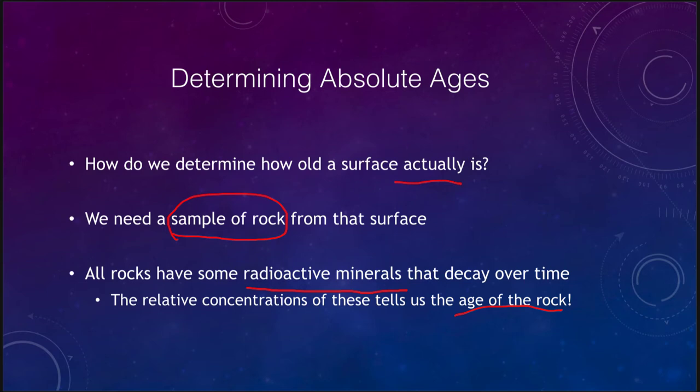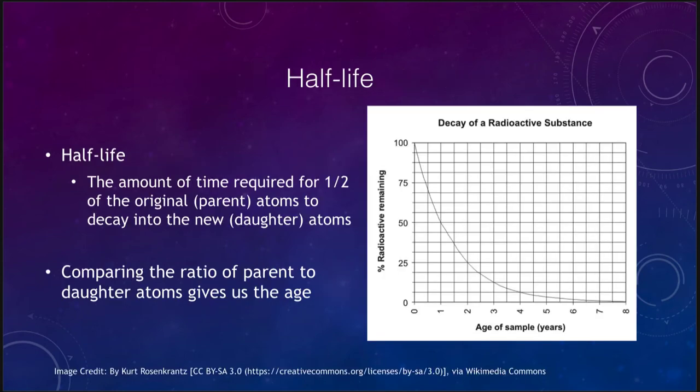Because we do not have samples of the entire moon, we have samples from various regions that the Apollo astronauts explored. We have to use the ages we determine there to help us extrapolate and determine ages elsewhere on the moon. So let's look at how this process works, using the concept of half-life.